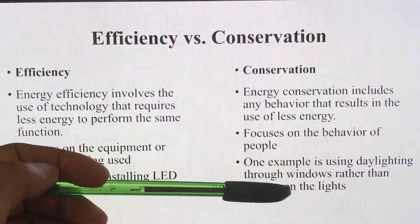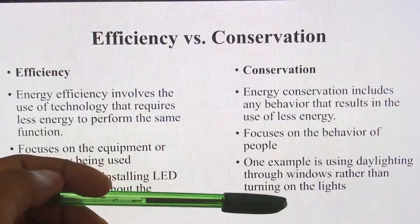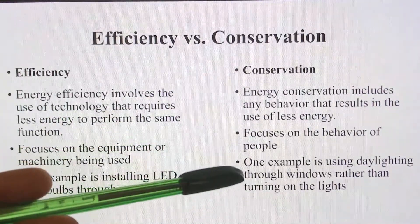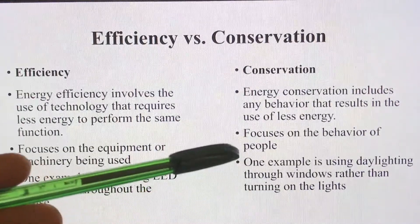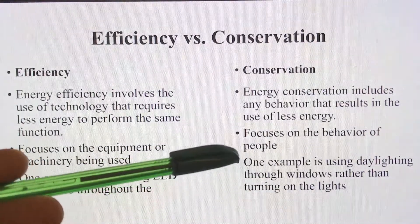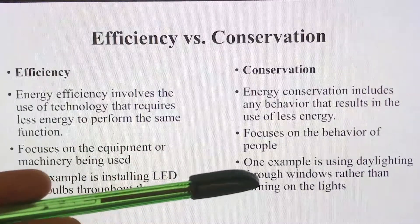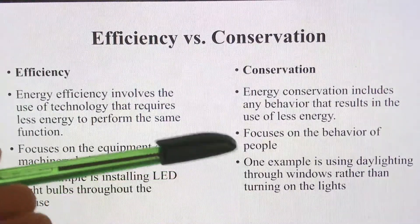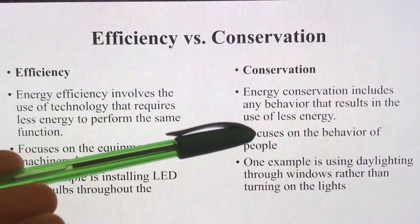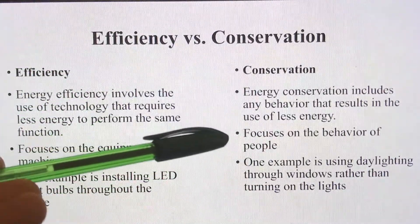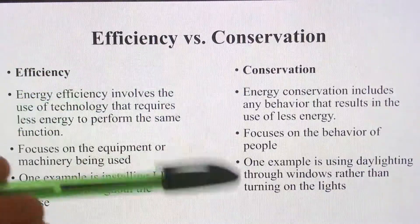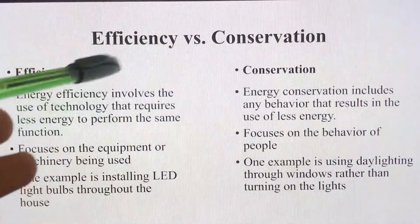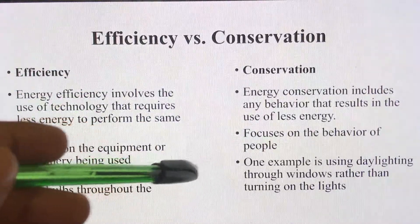One example of conservation is using daylighting through windows rather than turning on the lights. In European countries, huge glass windows are used so that natural lighting can be used directly instead of separate artificial lighting. This saves electricity, and since it is natural lighting, no emissions are produced to create it. These are the basic differences between efficiency and conservation, and this plays a major role in energy management technology.